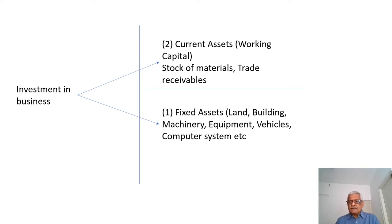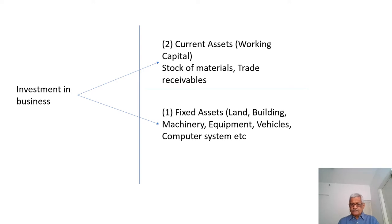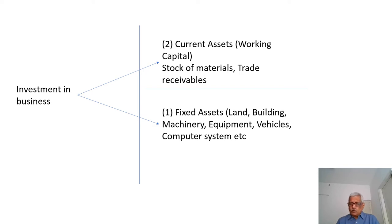For a manufacturing company, stock of materials includes raw materials, semi-finished goods — which are partially converted from raw material but not yet finished goods — and finished goods, as well as trade receivables. The current assets or working capital required for day-to-day expenses also varies depending on the nature of the business.